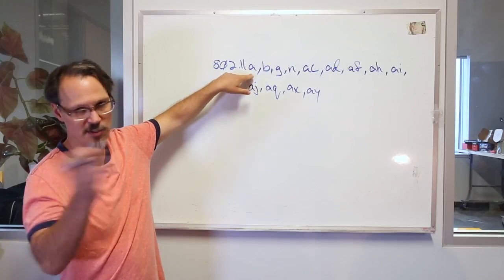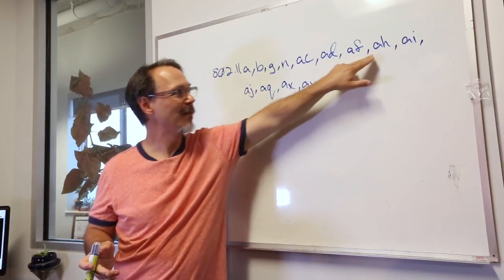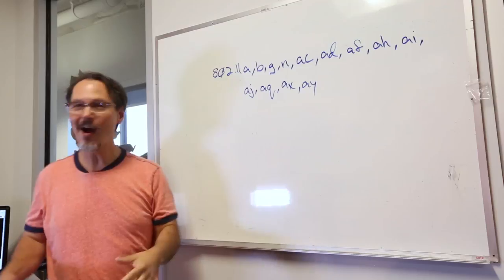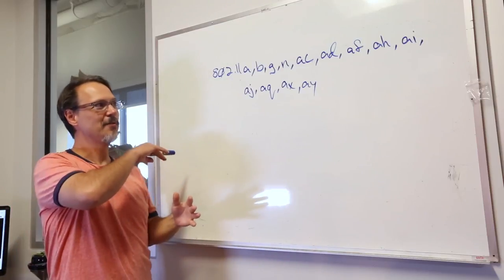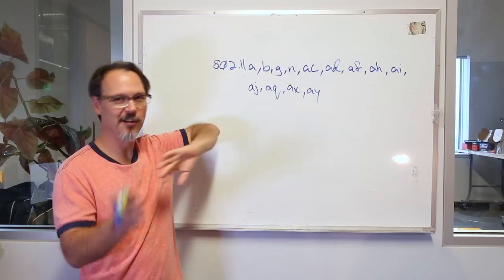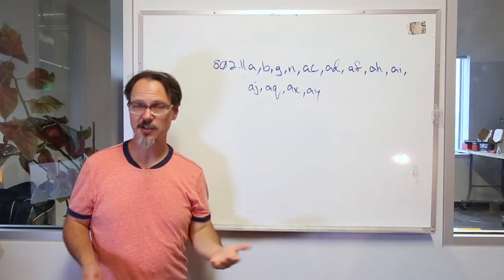There is A, which has become obsolete, B, G, N, AC, AD, AF, AH, AI, AJ, AQ, AX, and AY. Most of these are out in the world that you don't necessarily hear about. The big ones, B, G, N, those are all over the place. Maybe AC a little bit. Some of these are future releases.